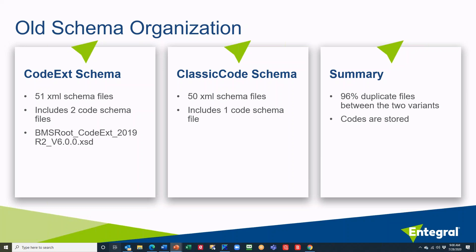The old schema organization: previously, the schema was organized into two separate deliverables — the code extension schemas and the classic code schemas. Unfortunately for the maintainers, there was 96% duplication in the files between these two deliverables. The code extension variant contained 51 individual XML files and the classic code variant contained 50 schema files. The only real difference between these two variants was the way codes were validated. The classic code schema only validates basic string-like restrictions, whereas the code extension schema validates specific code values. The codes were stored along with the other schema files, which is no longer the case.